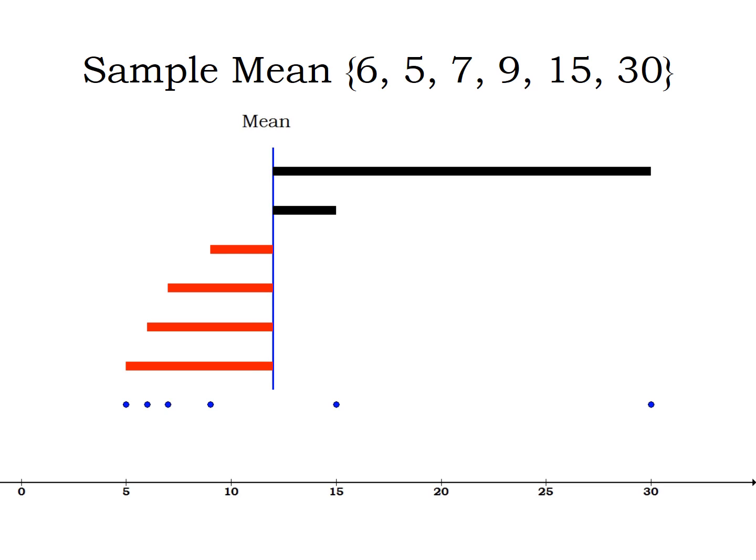So the sample mean is the point where, when we compare all the distances to the points that are to the left, and we take the distances from the mean and all the points to the right, and we add up those distances, the total distance between the mean and the values that are lower than it, and the total distance between the mean and the values that are larger than it, are going to be equal to each other. In physics, we call this the center of mass. It's that point where we have balance.